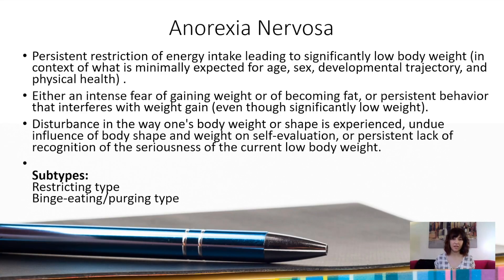So when most people think of eating disorders, they tend to think of anorexia nervosa first. This is the one that people typically think of as underweight, and here's what the DSM-5 actually says for the diagnosis. In order to have anorexia nervosa, you must meet the following criteria.